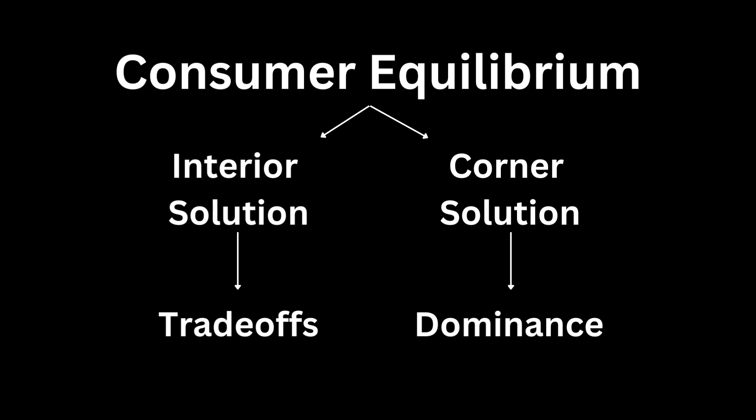In conclusion, understanding interior and corner solutions to the utility maximization problem provides valuable insights into consumer behavior and resource allocation. By analyzing the optimization process and considering the constraints faced by consumers, we can gain a deeper understanding of their preferences and decision-making. Thank you for joining today's lecture on interior and corner solutions to the utility maximization problem. If you have any further questions, feel free to leave them in the comments section below. Stay curious, and until next time, take care.